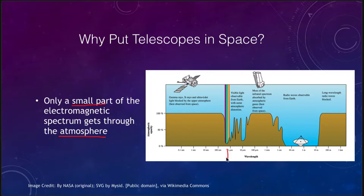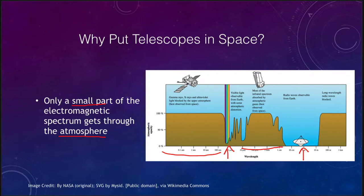Visible light makes it through, and lots of radio waves make it through, but if we want to look at things like gamma rays, x-rays, and ultraviolet — the short wavelength portion — very little of that gets through the atmosphere. A lot of infrared and even shorter wavelength radio are blocked out as well. So if we want to observe these, we have to get up high above the atmosphere in order to be able to see them.